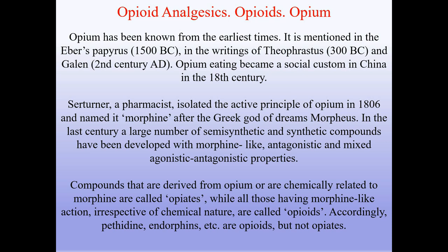Opium has been known from the earliest times, mentioned in the Ebers Papyrus and in the writings of Theophrastus and Galen. Opium eating became a social custom in China in the 18th century. Sir Turner, a pharmacist, isolated the active principle of opium in 1806 and named it morphine after the Greek god of dreams, Morpheus. Compounds derived from opium or chemically related to morphine are called opiates, while all those having morphine-like action, irrespective of chemical nature, are called opioids. Accordingly, pethidine, endorphins, etc. are opioids but not opiates.